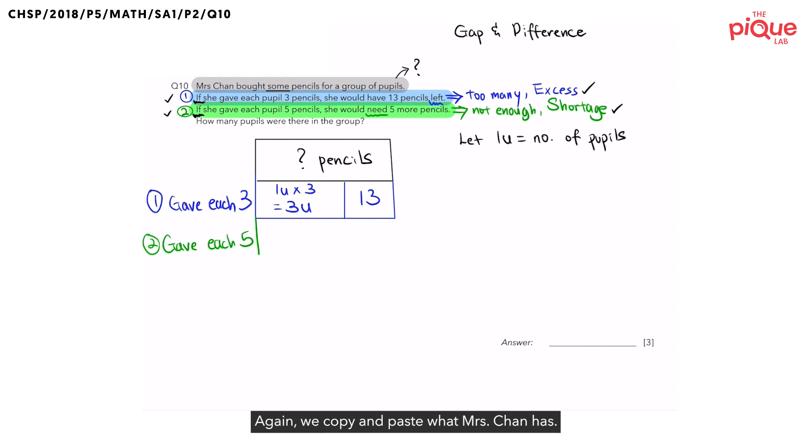Again, we copy and paste what Mrs. Chan has. We know that the keyword need means that she does not have enough pencils. How can we help her? We can lend her more pencils so that she has enough for all her pupils. We do not want a situation of unfairness among her pupils. Let's use dotted lines to indicate these five extra pencils that we lend to Mrs. Chan since she has a shortage and she doesn't actually have these five pencils. With all these pencils and keeping in mind that we have one unit of pupils, Mrs. Chan actually gave away five units of pencils in case two. We can note this down in our case two green model.